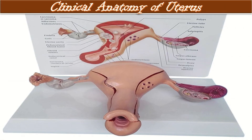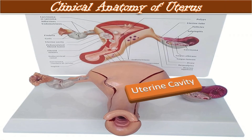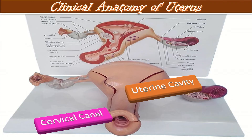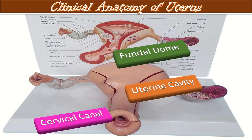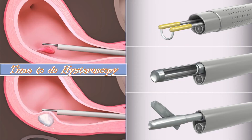Regarding the clinical anatomy of the uterus relevant to hysteroscopy: the uterine cavity is flat on its anterior and posterior surfaces, and when not distended the anterior and posterior endometrial surfaces are opposed to each other. The cervical canal is rounded, but once entered, the lateral dimensions widen. The fundal dome may be flat, concave, or convex on its inner surface.